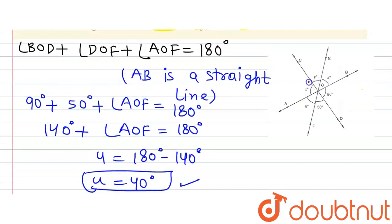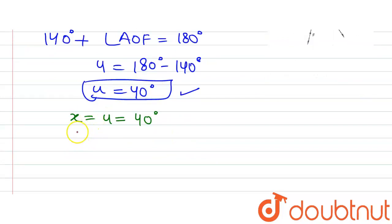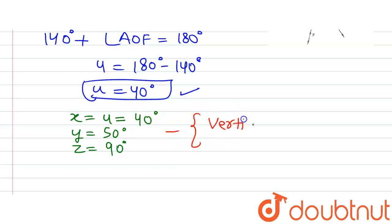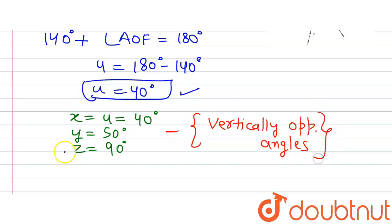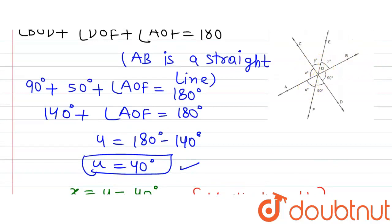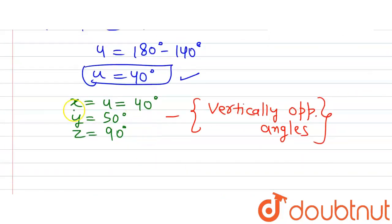Similarly, angle Y will be equal to 50 degrees and angle Z will be equal to 90 degrees. The reason for all three is the same: they are vertically opposite angles, and vertically opposite angles are equal. So we have found all the measures of the angles we were supposed to find — the values of X, Y, Z and U.